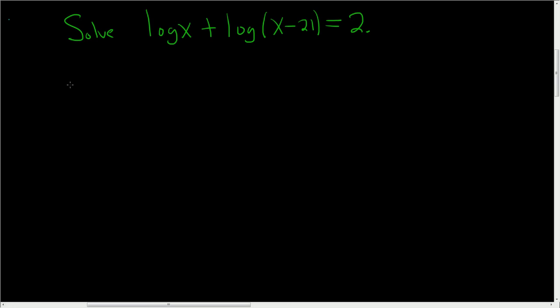Okay, so we have to solve this equation. It has two logarithms in it. So here we have a plus sign, so we'll start by using the product rule. So this is log of x times x minus 21, and this is equal to 2.